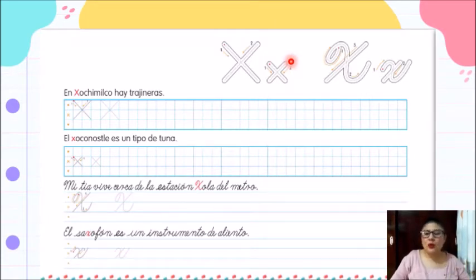Después, vamos a agarrar un color y vamos a remarcar cada una de estas letras. Recuerda que debes de comenzar donde está el puntito y seguir la dirección que las flechas y los números nos indican.